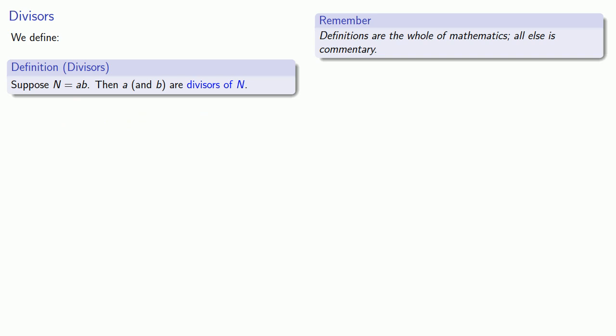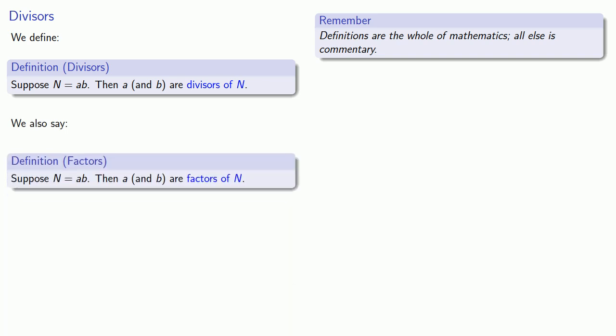Now we actually have a different definition that's very similar. We also say the following. Suppose N equals a times b. Then a and b are factors of N. Now if you look at these two definitions, you'll see there's a very important difference between the two of them. Here we call them divisors. Here we call them factors.